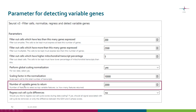All this happens in Chipster in a tool called 'filter cells, normalize, regress and detect variable genes.' For this particular step, the relevant parameter is the number of variable genes to return.